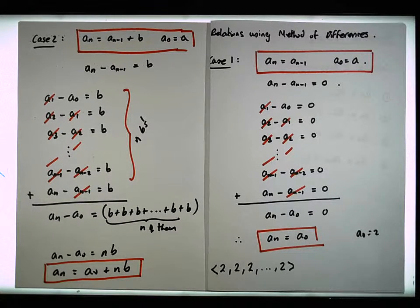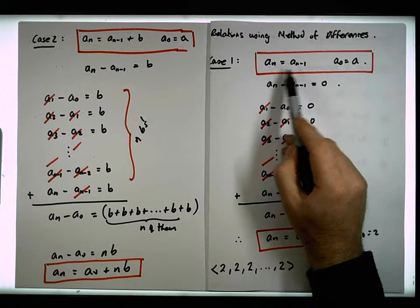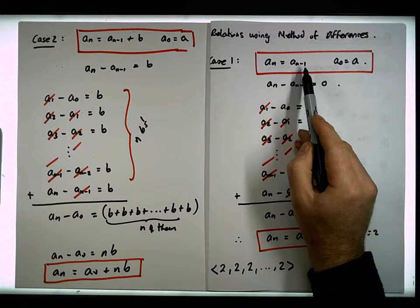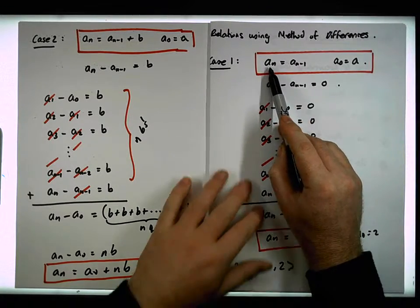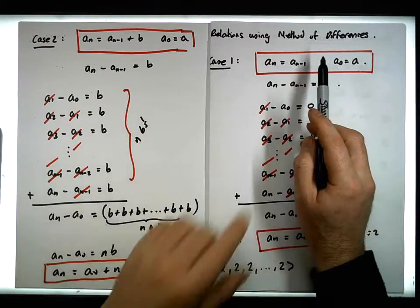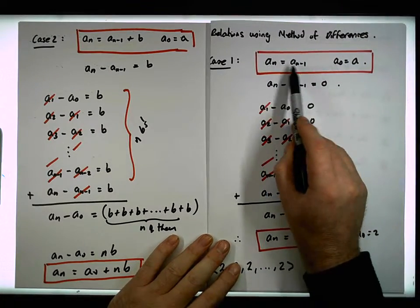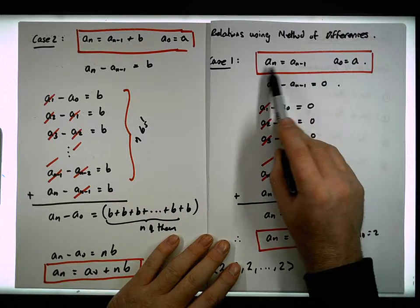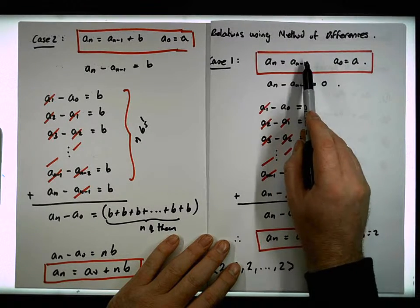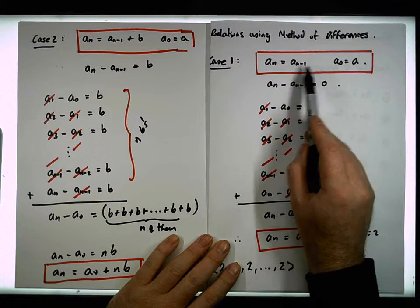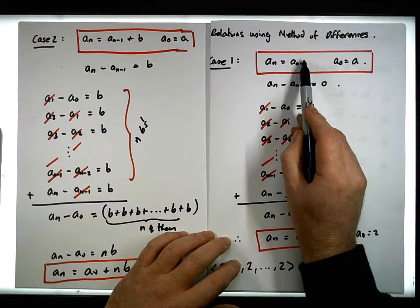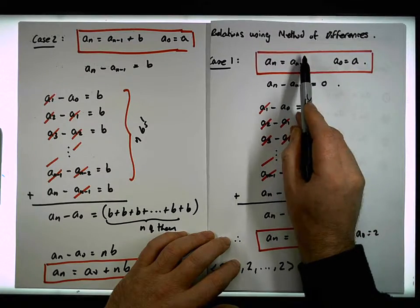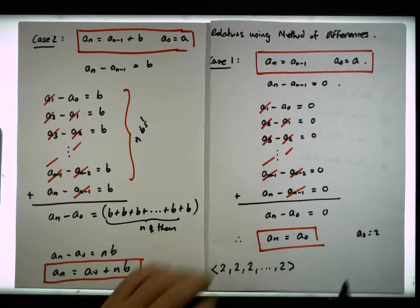Let's note something here. What we have is a linear homogeneous recurrence of degree 1. It's degree 1 because the nth term is defined in terms of just one previous term. It's linear because each term is raised to the power of 1, and there are no products of terms. They're homogeneous because all terms are to the same power — which here is just power of 1.